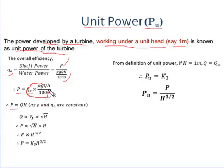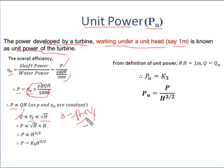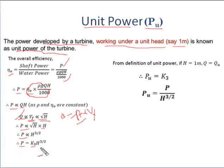Eliminating all constant parameters (ρg × overall efficiency / 1000), we get P is directly proportional to Q·H. Since Q is directly proportional to flow velocity, and flow velocity is directly proportional to √H, substituting gives P is directly proportional to √H × H. Therefore P is directly proportional to H^(3/2). Eliminating the proportionality constant, P = K₃·H^(3/2).